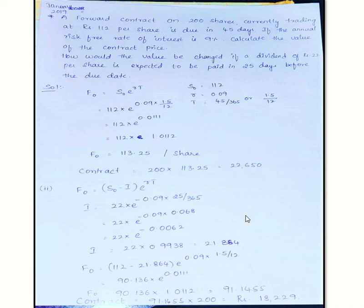Per lot, 200 shares, so 91.1455 × 200 shares gives the forward contract amount as 18,229 rupees. So with no income, it's 22,650 rupees. With Rs. 22 dividend 20 days before the due date, the value is 18,229 rupees.